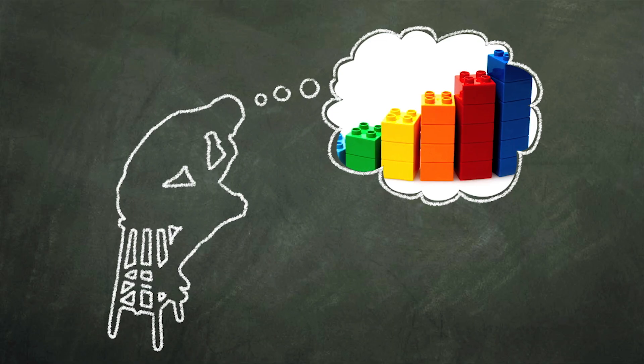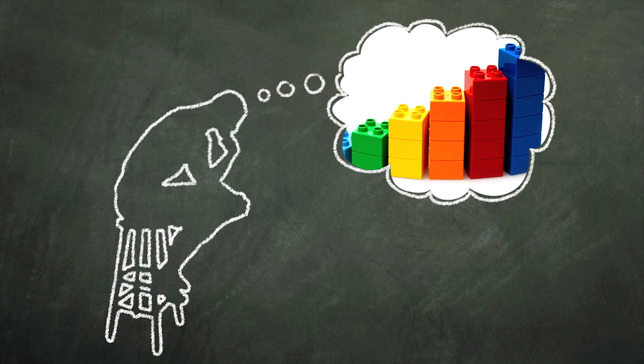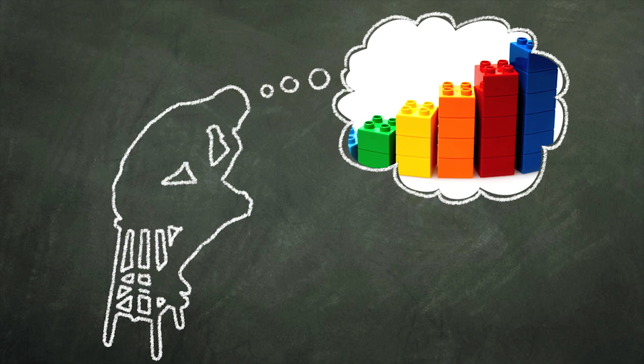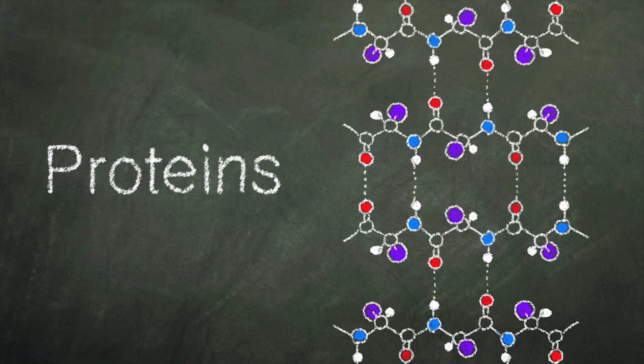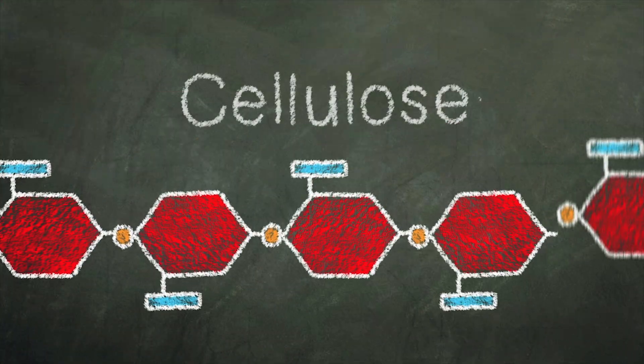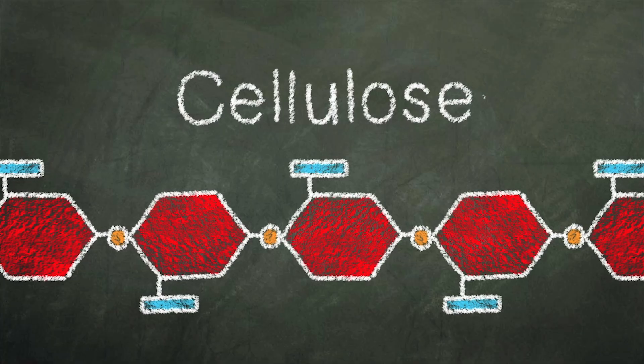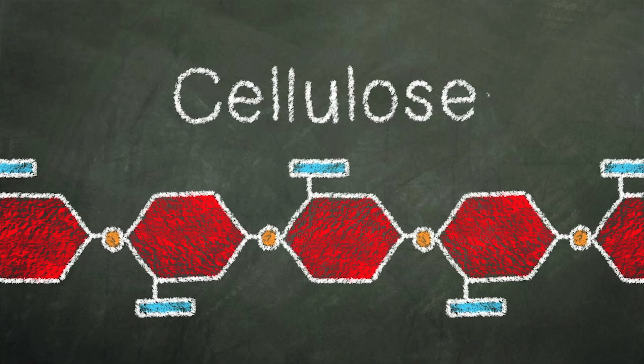Many people think of plastics when they hear the word polymer, but polymers can be synthetic or natural. DNA, proteins that make up our hair and muscles, and cellulose, the molecule that gives plants their sturdy structure, are all natural examples of polymers.